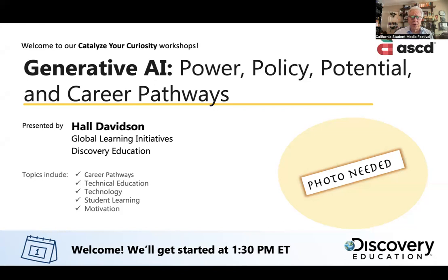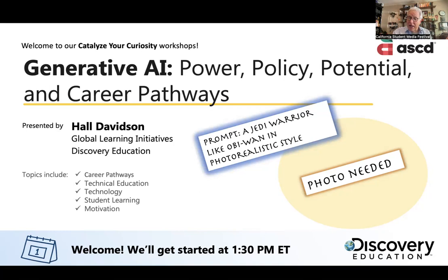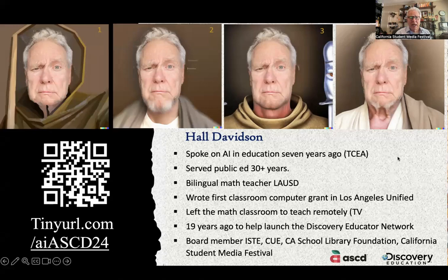This is the first slide we use, and there's a photo needed of me because I like to have a photo at conferences. Since I'm old enough to have been around before photography, I thought I'd have AI generate a picture. I wanted a prompt of a Jedi warrior like Obi-Wan in photorealistic style. I uploaded a picture of myself and turned myself into a Jedi warrior. DALL-E gave me a choice of four images — then you can click on one and follow up. Which of these four do you think I should have used at the conference? One, two, three, or four.